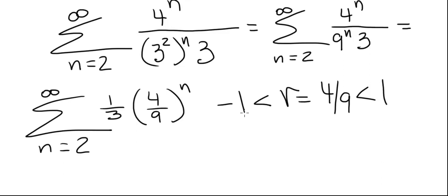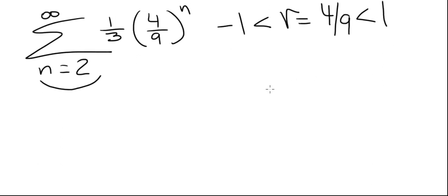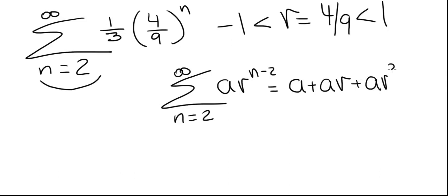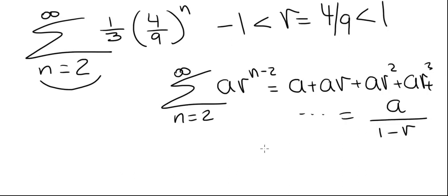Now we have to determine what it will converge to. Since this series starts at 2, not at 0, we have to be careful because we can't quite use the standard geometric series formula that starts at 0. When a geometric series starts at 2, it has to be in the form a times r to the n minus 2, which expands as a plus a times r plus a times r squared plus a times r cubed, and so on, and that equals a divided by 1 minus r, provided r is between minus 1 and 1.